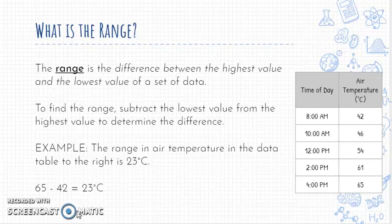Lastly, the range is the difference between the highest and lowest values in a data set. To find the range, subtract the lowest value from the highest value. For this example, 65 minus 42 degrees Celsius gives a range of 23 degrees Celsius.